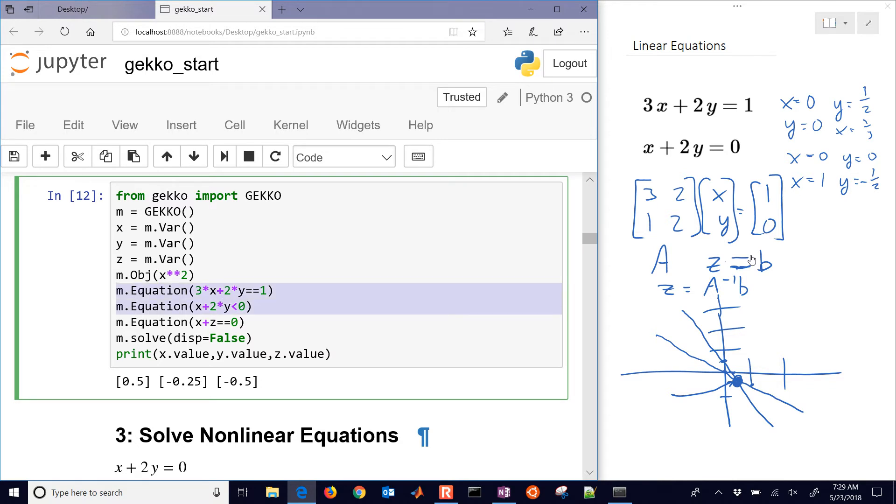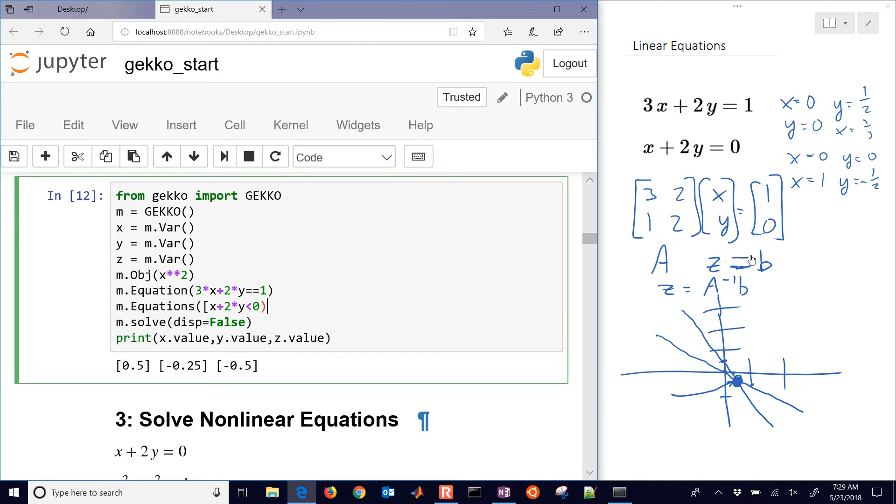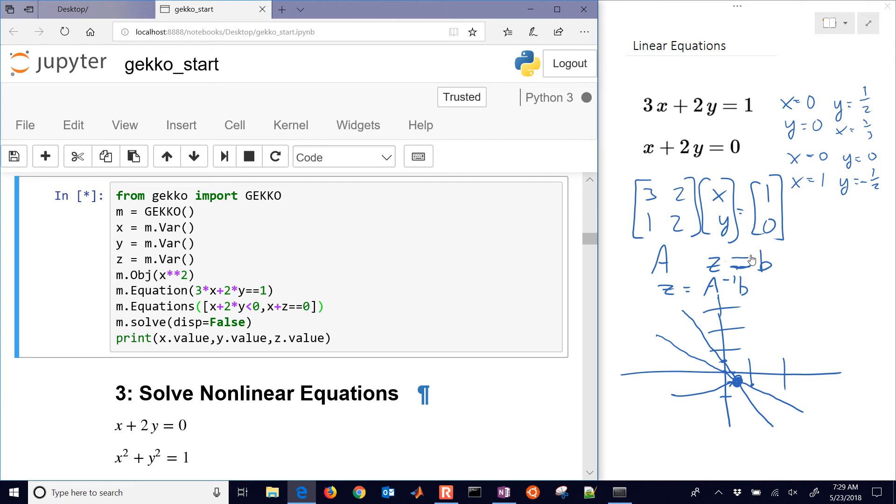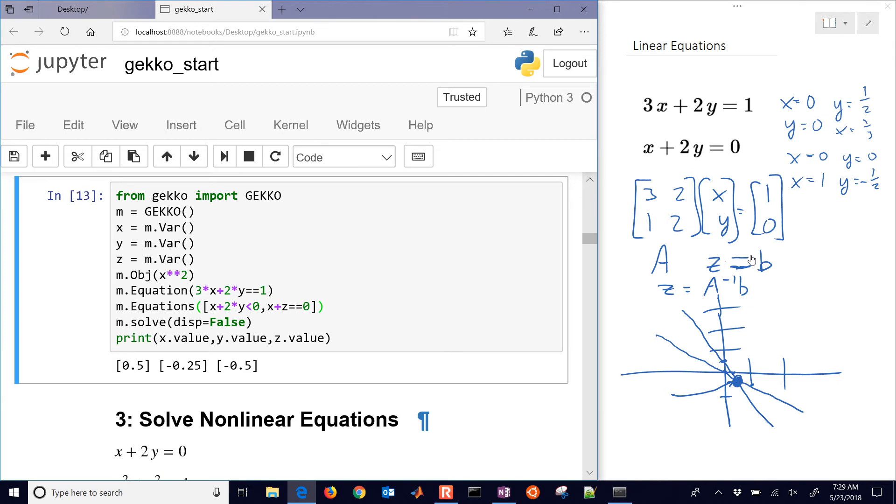You can also add equations as lists. Just use equations instead of equation. And then I'm just going to add this one with the other one. So if you want to add multiple at a single time, you just separate them with commas and create a new list. And then you should get the same solution as before. So that's a tutorial with Gecko on solving sets of linear equations.